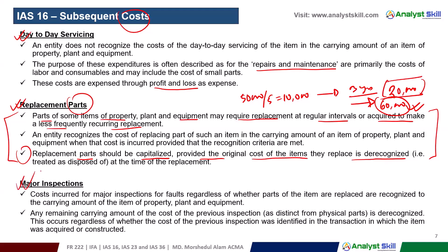Major inspections, such as overhauling, are a huge cost. The cost incurred for major inspection is capitalized regardless of whether parts are replaced or not. If a major inspection is required, you will need to capitalize the inspection cost and derecognize the carrying value of the remaining previous inspection costs.